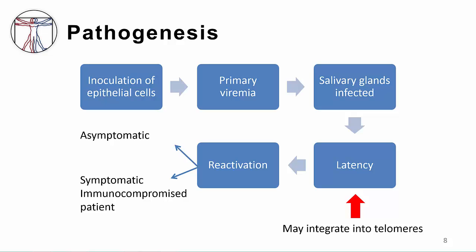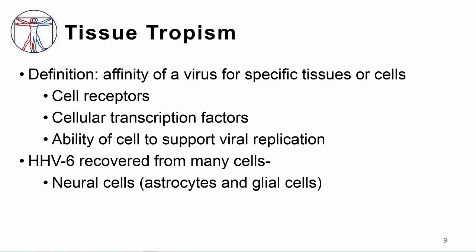Reactivation occurs and may be asymptomatic or result in illness depending on whether the patient is immunocompromised. Viral affinity for specific body tissues, or tissue tropism, is determined by: first, cell receptors for the virus; second, cell transcription factors that recognize viral promoters and enhancer sequences; and third, the ability of the cell to support viral replication.